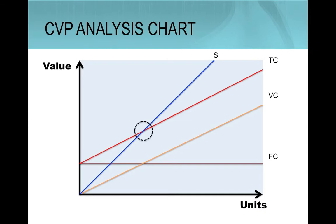After the lines are drawn representing the total costs and sales, we can get an intersection point where the total costs are equal to sales. This is called the break-even point.